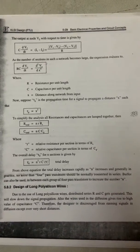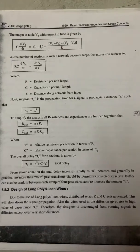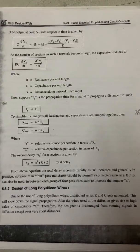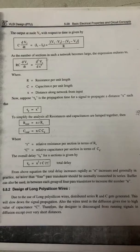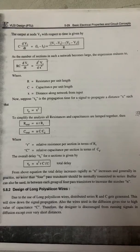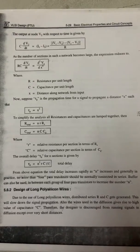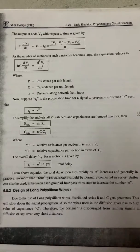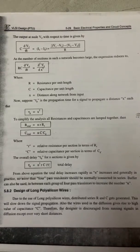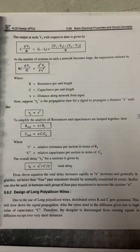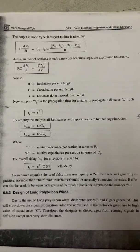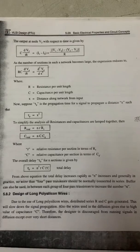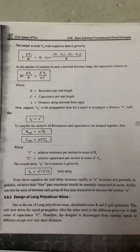The second category is the design of long polysilicon wires. Due to the use of long polysilicon wires, distributed series R and C are generated, which slow down signal propagation. The wires used in diffusion give rise to high values of capacitance; therefore, designers are discouraged from running signals in diffusion except over very short distances.